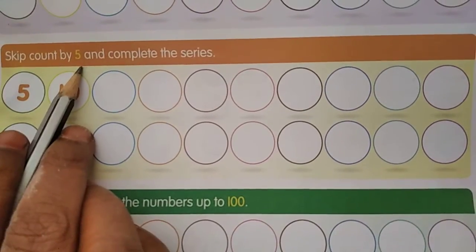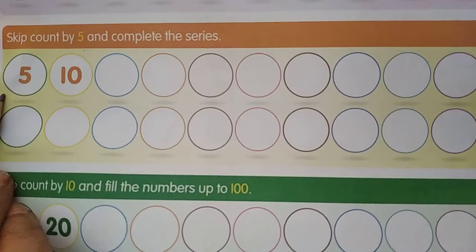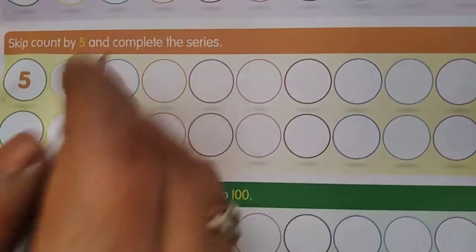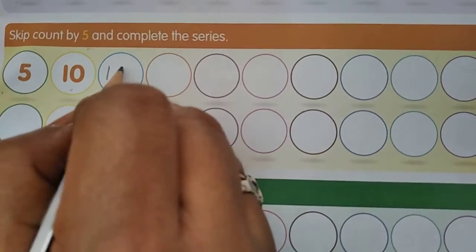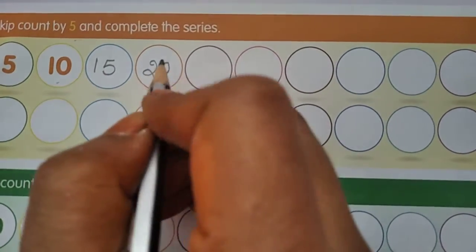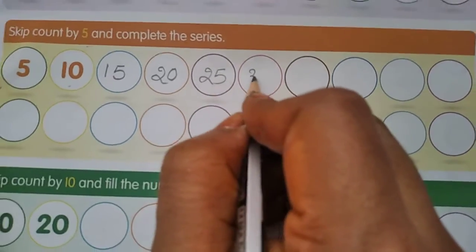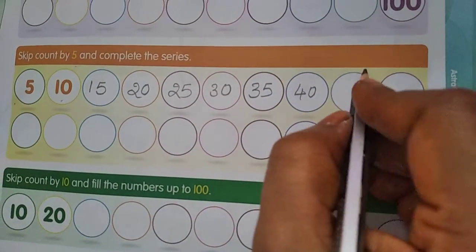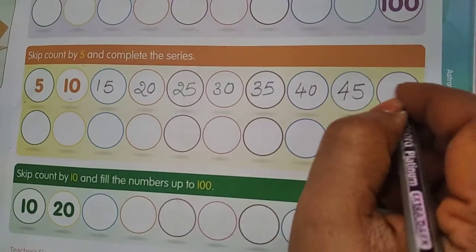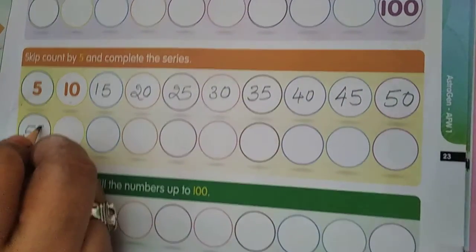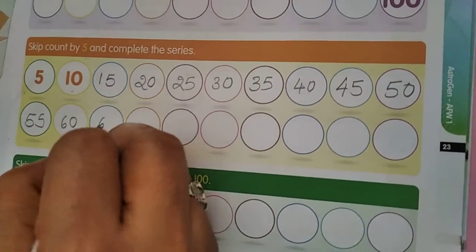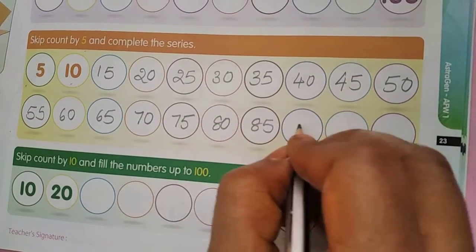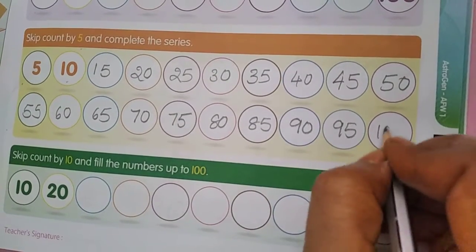Skip count by 5 and complete the series. 5, 10 — after 10, skip 11, 12, 13, 14. Up to 14 we have to skip. 15, 20, 25, 30. 30 after 35, 40. We have to skip only 5 numbers. 45, 50, 55, 60, 65, 70, 75, 80, 85, 90, 95, 100.